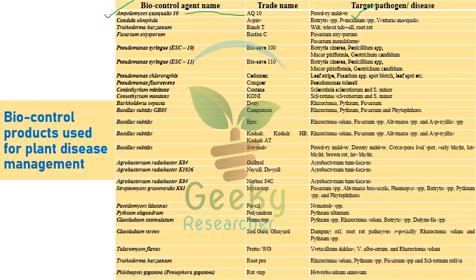The second one is Candida oleophila, with the trade name Aspire, which is recommended against Penicillium, Venturia, Botrytis species, and various other target pathogens. Then Trichoderma harzianum, trade name Binab, is recommended against wilt, root rot, and Fusarium oxysporum.